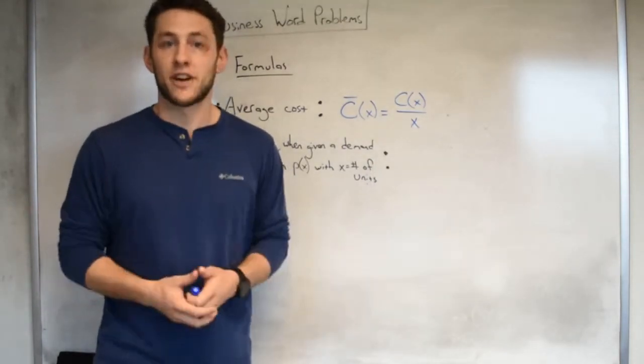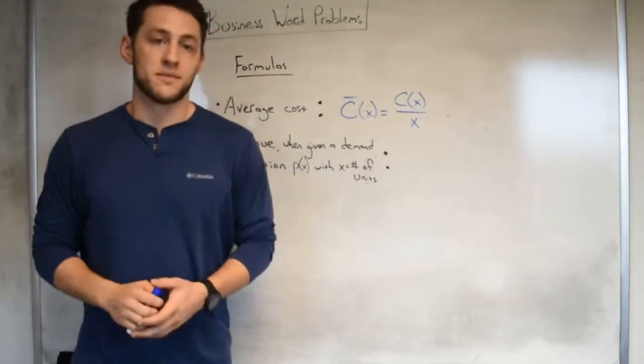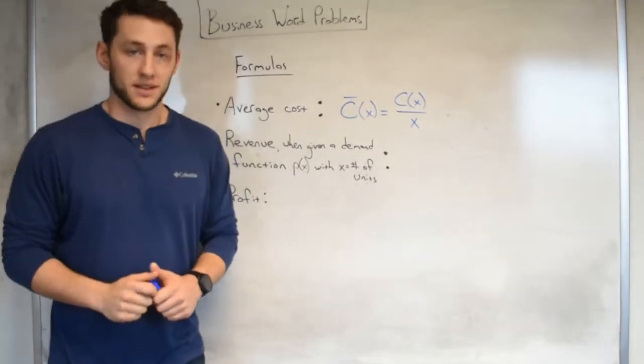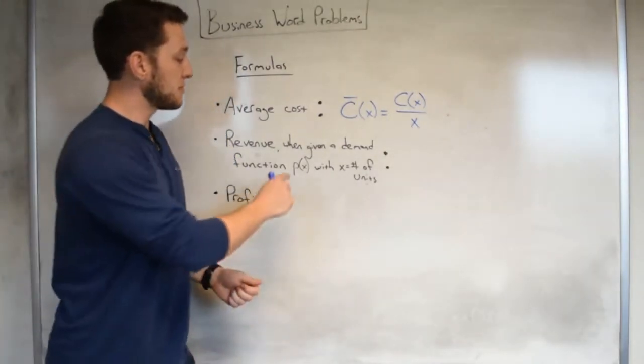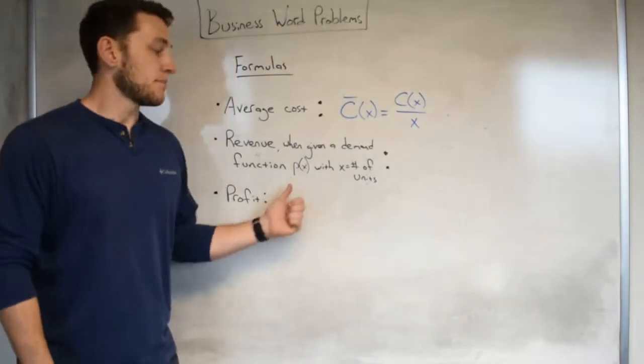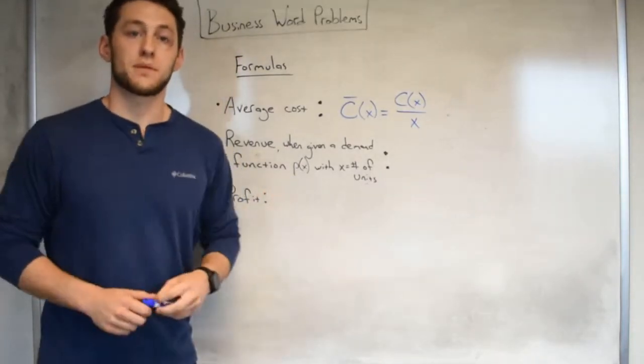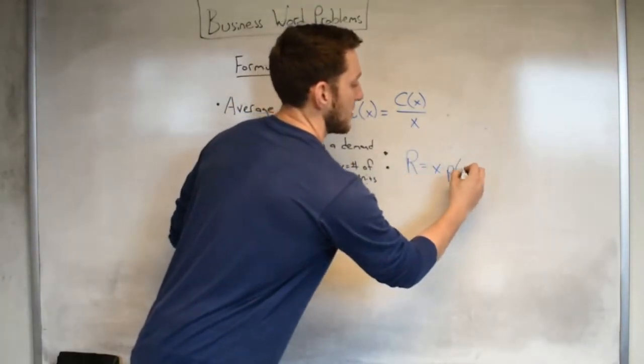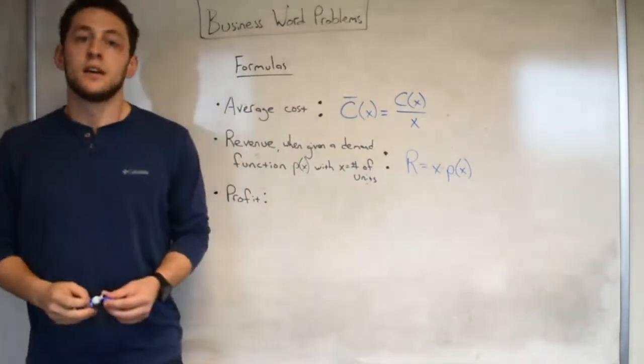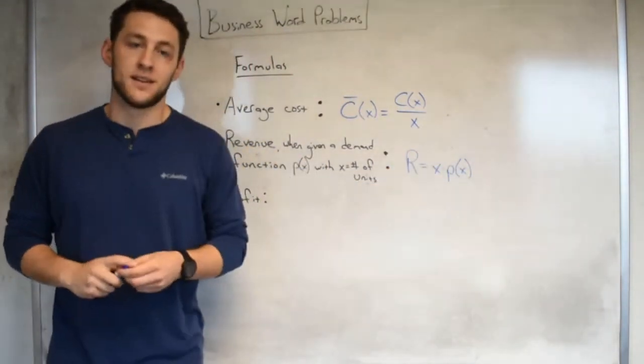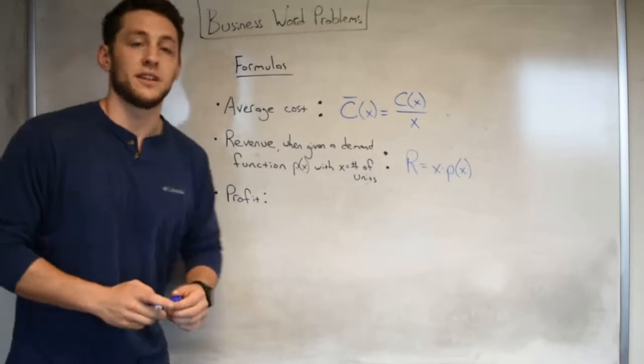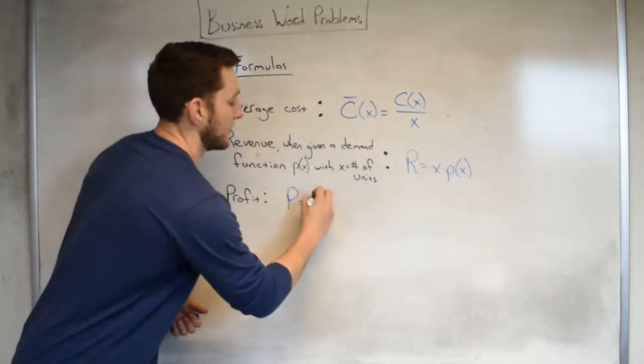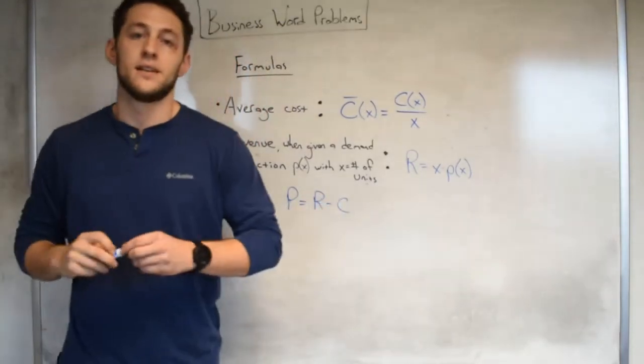An easy way to think about this is to think about yourself in a situation like this. Let's say I have 20 baseball cards and the total amount is worth a hundred dollars. On average, how much is each card worth? About five dollars. That's average cost. From there we want to talk about revenue when given a demand function. So given a demand function p(x), where x is the number of units and p is the price per item, we could say that revenue is just equal to x times p(x). Be careful, you will have to distribute in that x. Last but not least, profit is just the thing we're used to: profit is just equal to revenue minus cost.